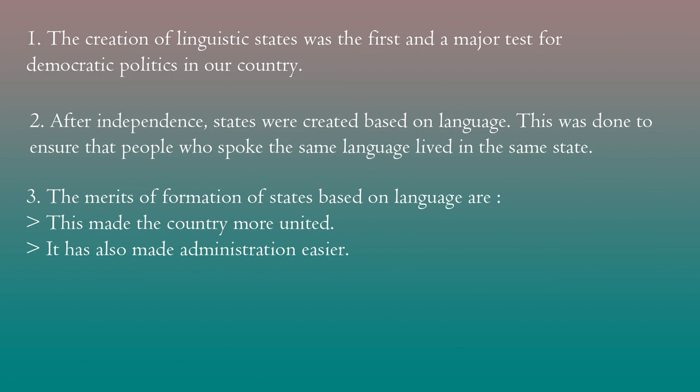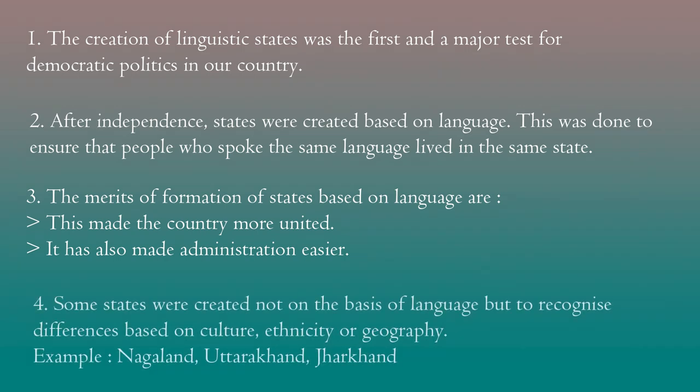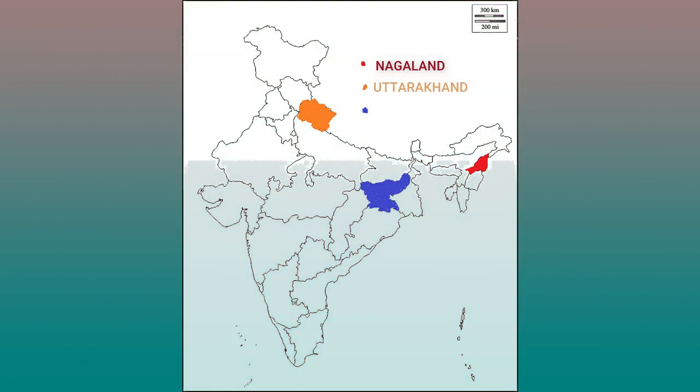Some states in our country were not created on the basis of language, but to recognize differences based on culture, ethnicity, or geography. Examples are Nagaland, Uttarakhand, and Jharkhand. Name any two states formed on the basis of culture, ethnicity, or geography — this is one of the board exam question answers: Nagaland, Uttarakhand, and Jharkhand.